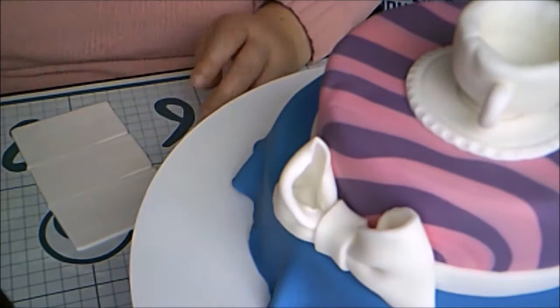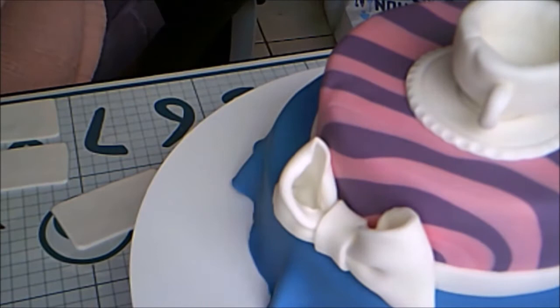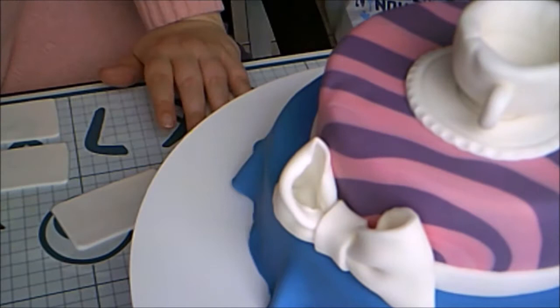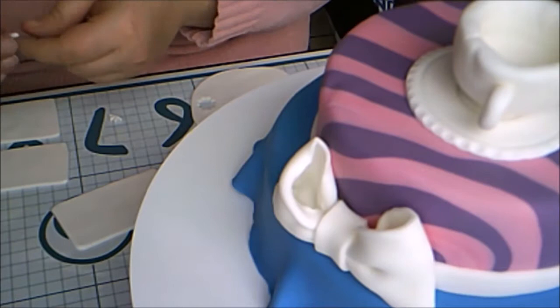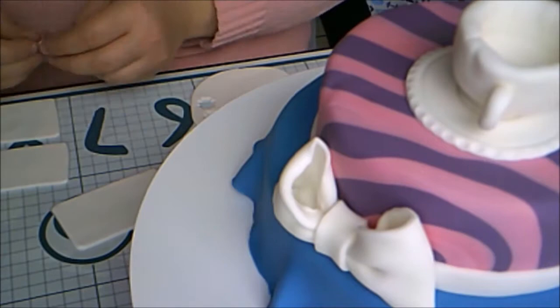Then I rolled out some more white fondant and cut it into rectangles. I also cut out some daisies with the plunger cutter, cut them in half, and formed them into little crosses to look kind of like clovers or clubs.